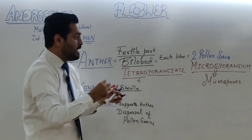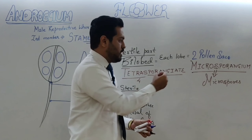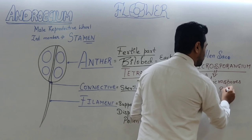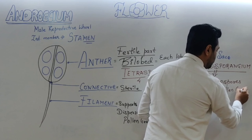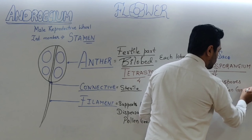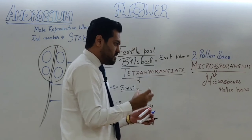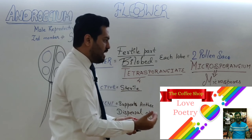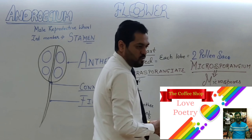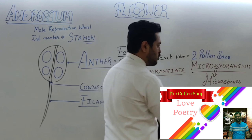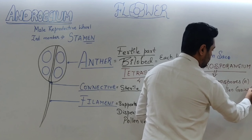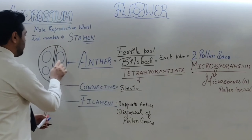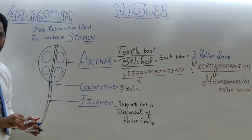We will discuss in reproduction in plants how microspores develop from microspore mother cells. Microspores are essentially pollen grains — there is a slight difference in their cell wall differentiation, but microspores are referred to as pollen grains. The formation of pollen grains occurs inside the pollen sac.